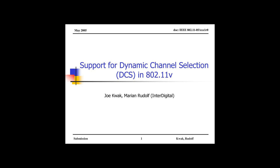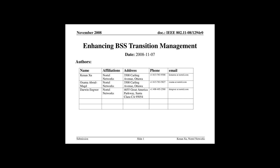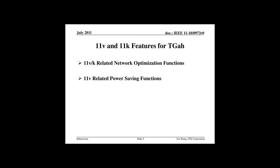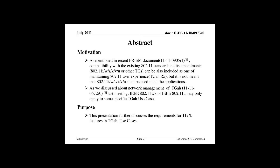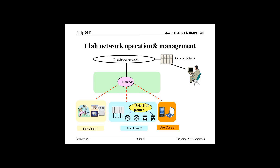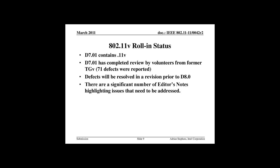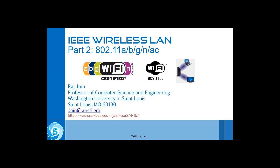802.11 is a set of IEEE standards that govern wireless networking transmission methods. They are commonly used today in their 802.11a, 802.11b, 802.11g, 802.11n, and 802.11ac versions to provide wireless connectivity in the home, office, and some commercial establishments.